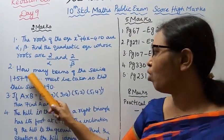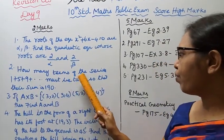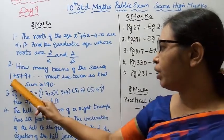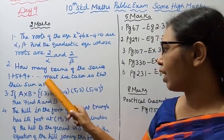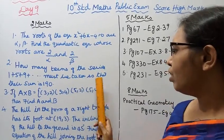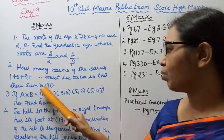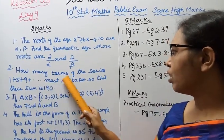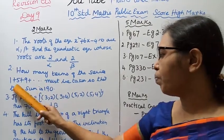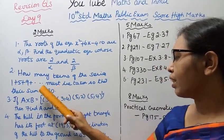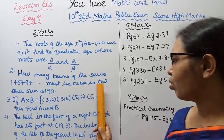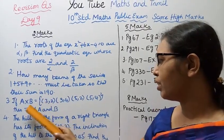Second one, how many terms of the series 1 plus 5 plus 9 etc. must be taken so that their sum is 190? How many terms of the series 1 plus 5 plus 9 etc. must be taken so that their sum is 190?